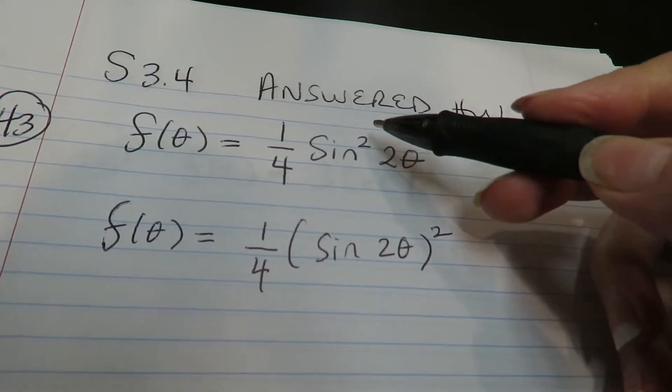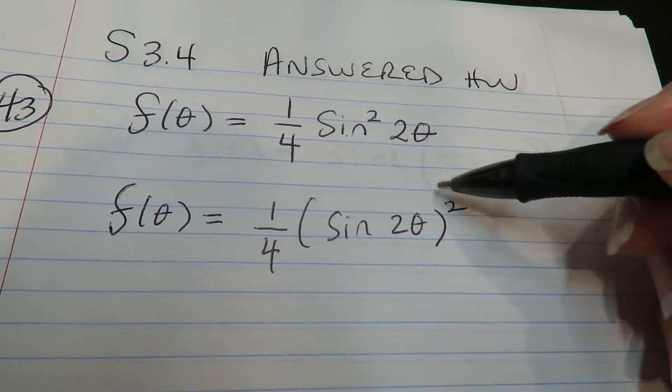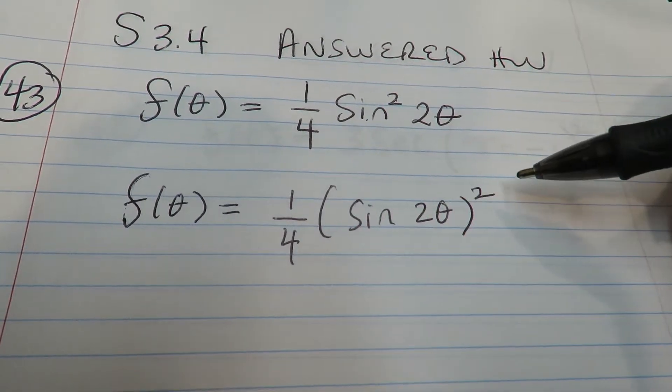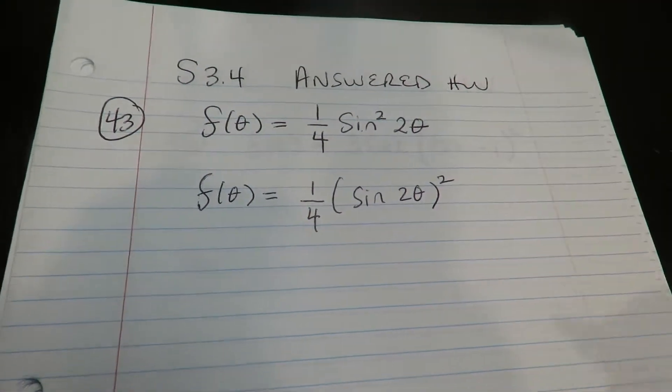Let me just rewrite it in case anybody needs to see it from a different perspective. Okay, so remember, if the two is on the trig, that's the same thing as saying you have two of these functions, these trig functions.